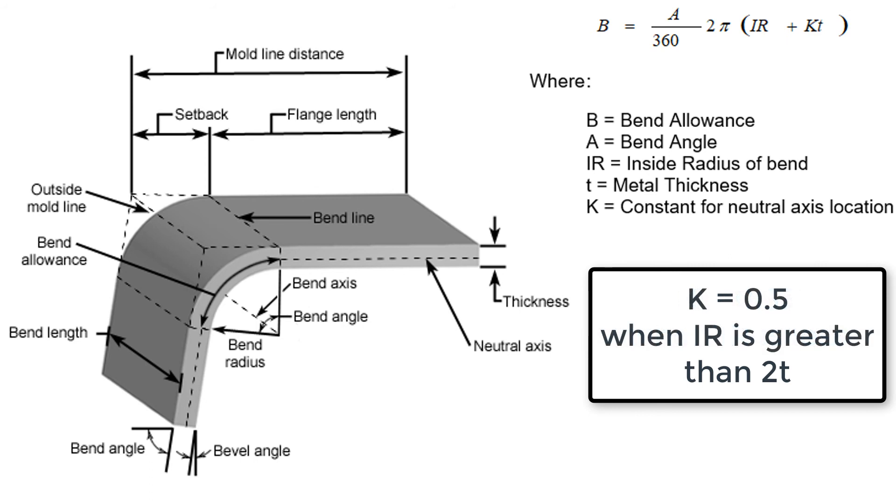And when the internal radius of the bend is more than two times the metal thickness, a K value of 0.5 is used.